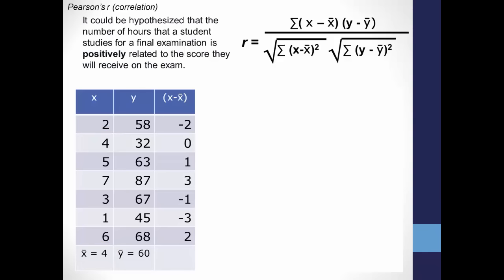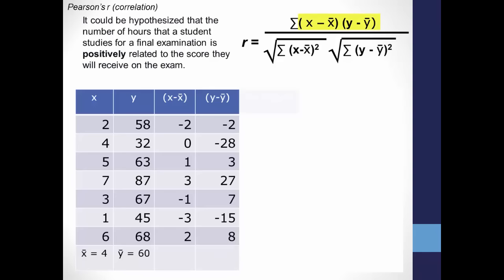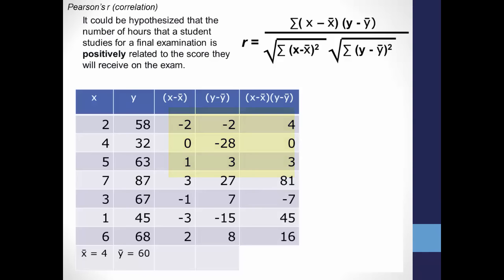Then do the same for y: 58 minus the mean of y, which is 60, equals negative 2. Then 32 minus the mean of y, 60, equals negative 28, and so on. The formula tells us to multiply these two scores together: negative 2 times negative 2 equals 4. Then 0 times negative 28 is 0, and so on. Sigma tells us to add all of these products together, which gives us 142.